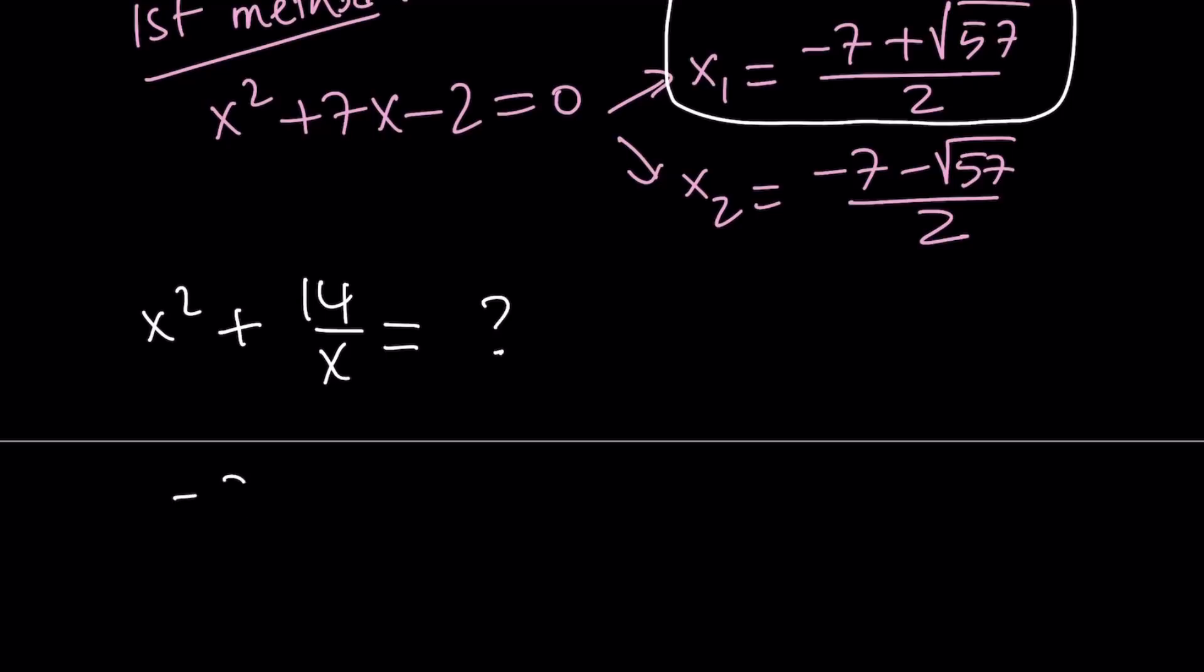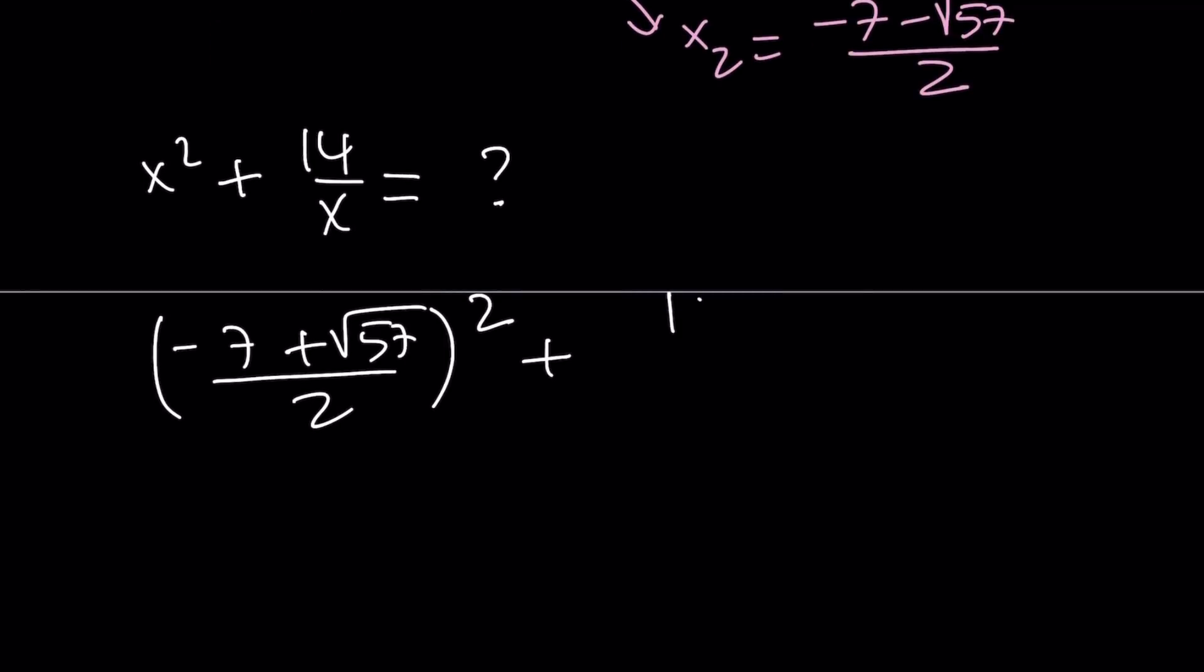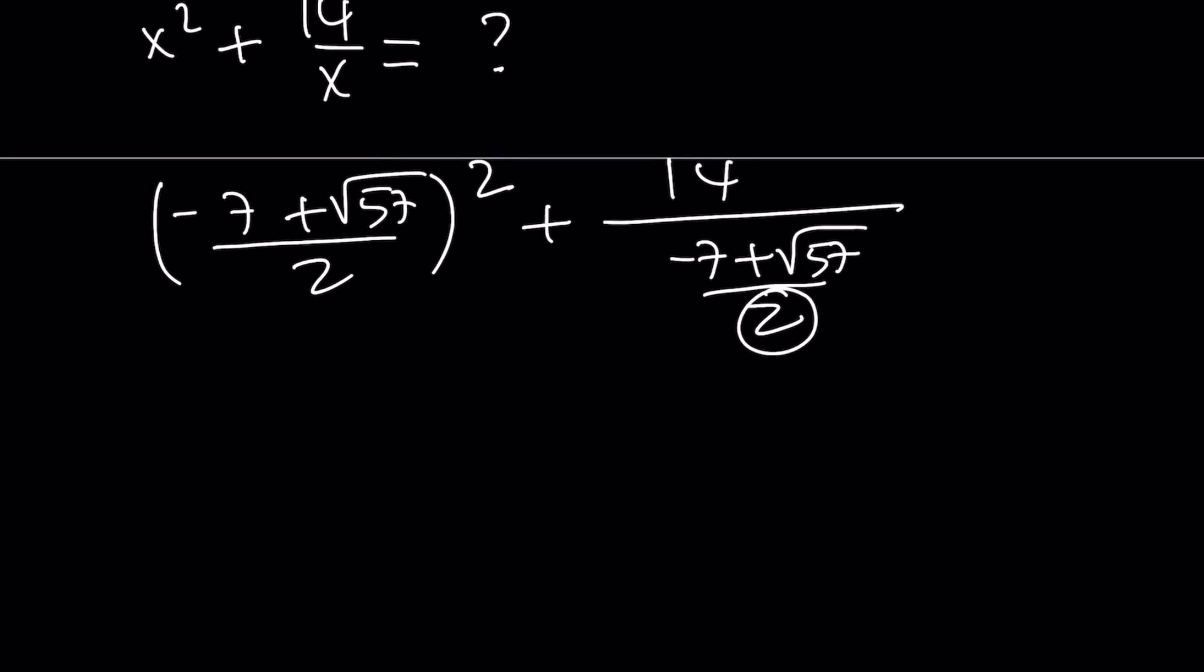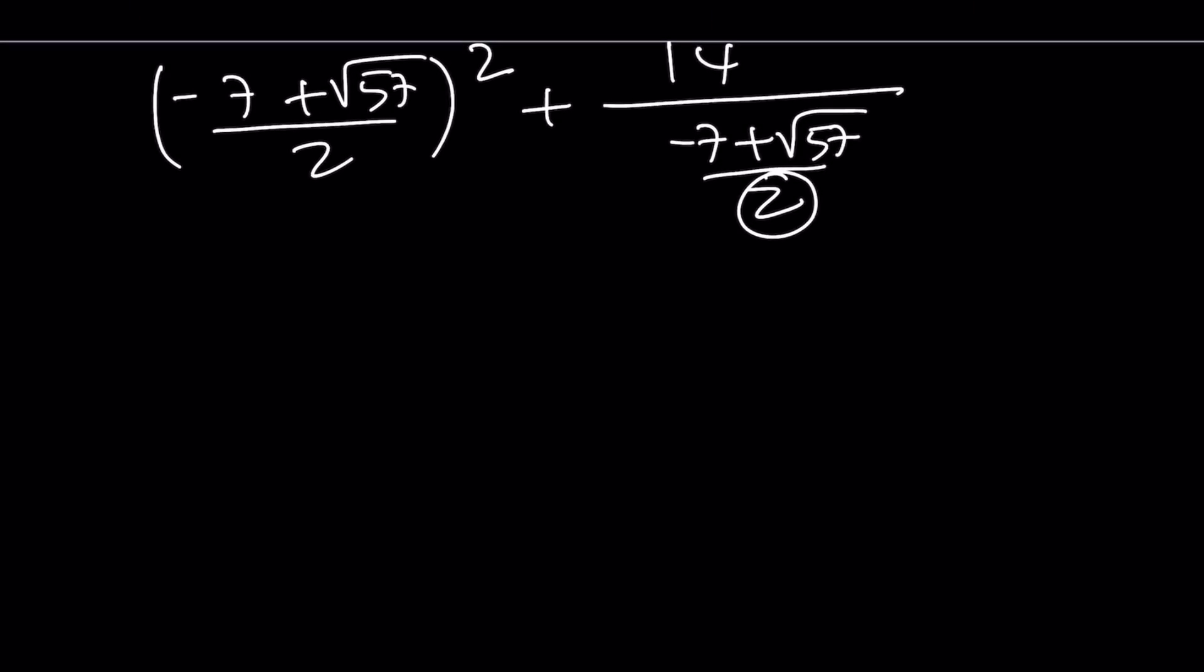Let's go ahead and square negative 7 plus square root of 57 over 2. If you square that, and then we're going to add 14 divided by the x value, which is negative 7 plus square root of 57 over 2. Okay, great. Now, when you flip this and multiply, you're going to get 28, and let's go ahead and square this expression right here, the radical.